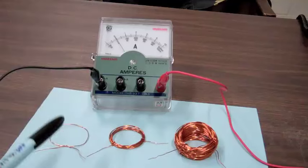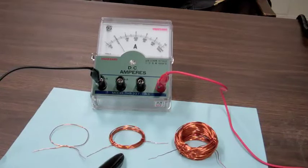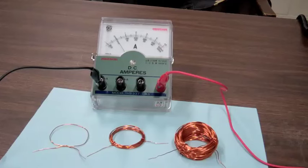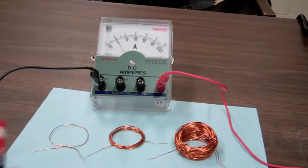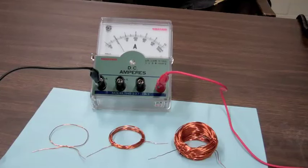I have an ammeter here and I have three coils. I have a coil with one loop, ten loops, and one hundred loops. I also have a bar magnet, and I will start by connecting the single loop coil to the ammeter.